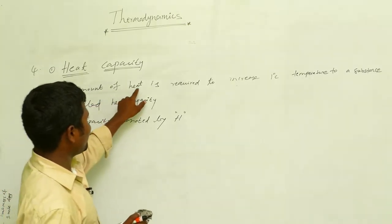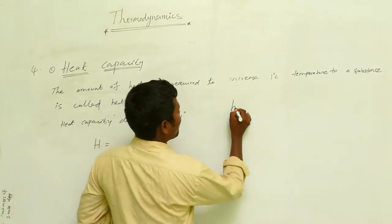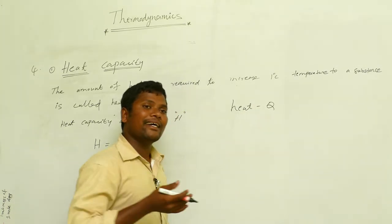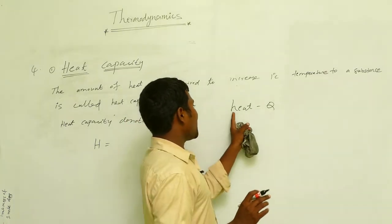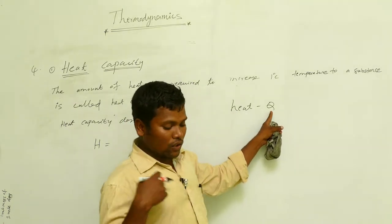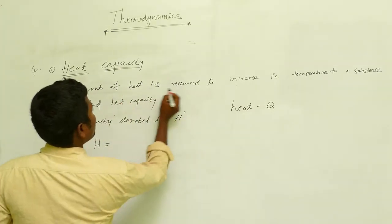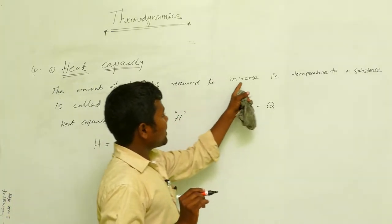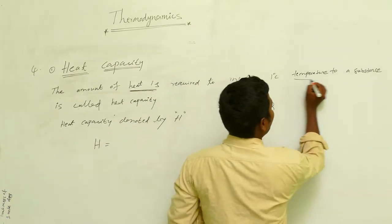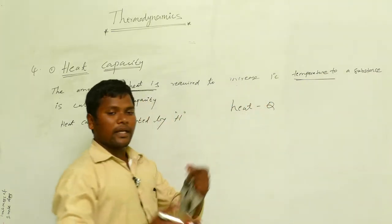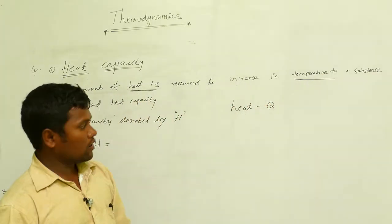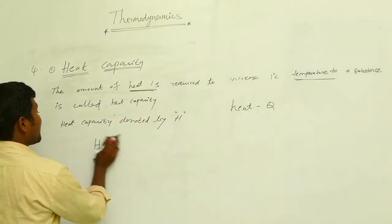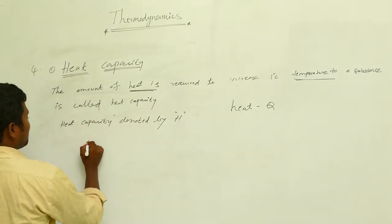According to the definition, heat is denoted by Q — the first letter of 'calorie' (the unit used to measure heat). The amount of heat required to increase temperature applies to any substance — solid, liquid, or gas. Now we are going to write the mathematical formula for heat capacity.